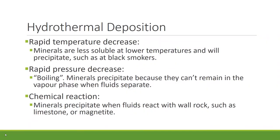Mineral precipitation takes place in the crust as a result of physical or chemical changes to the fluid. When temperatures decrease, minerals become less soluble and precipitate out of solution. This is very common at black smokers, when hot hydrothermal fluids are expelled into cold ocean water, resulting in the formation of sulfide chimneys.